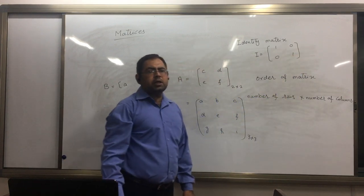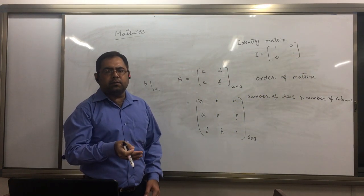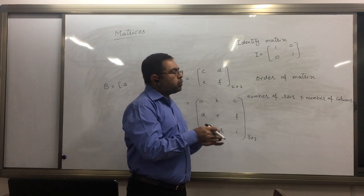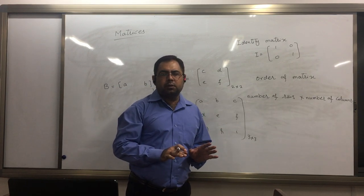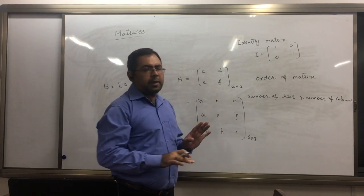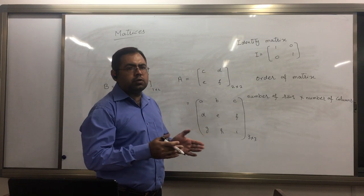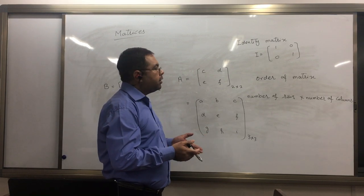One thing you must remember: identity matrix is also a square matrix. Also a square matrix, even if it has 2 rows 2 columns, if it has 3 rows 3 columns, whatever.